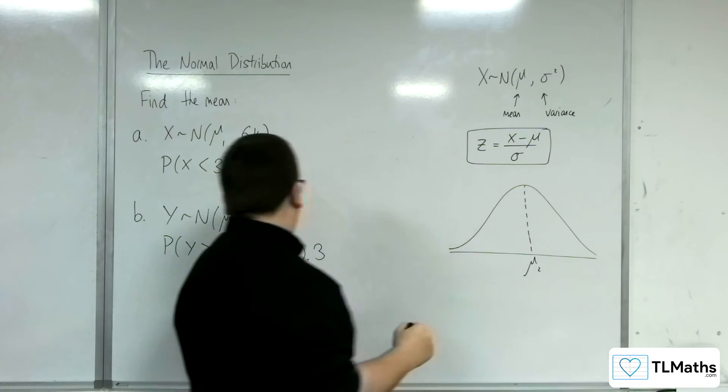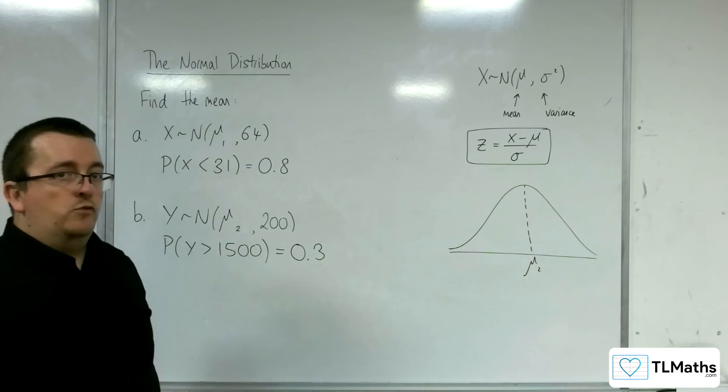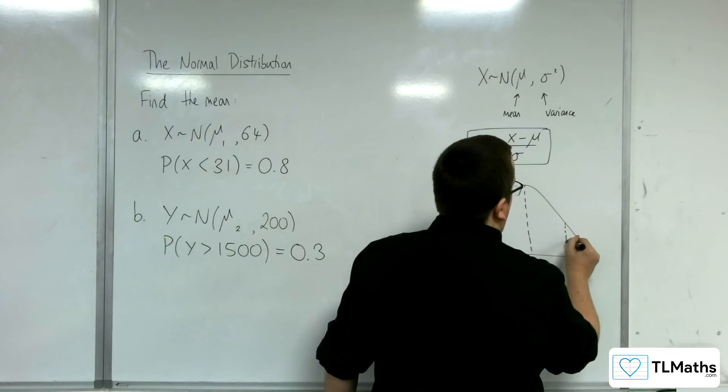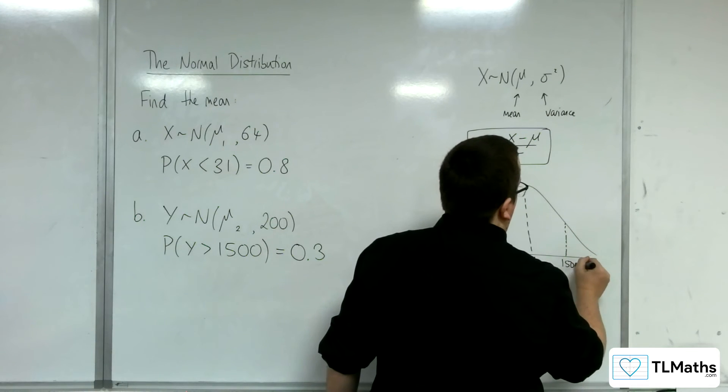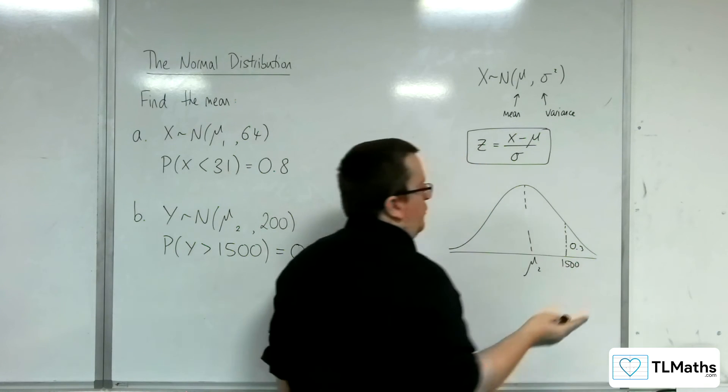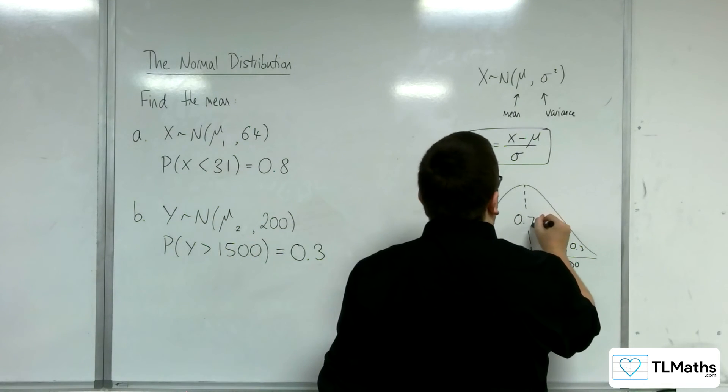There's mu2. To the right of 1500 must be an area of 0.3. So 0.3 is quite small. For it to be on the right, that means that 1500 has got to be over here for that to be 0.3. Now, I can't look up 0.3 in my calculator, so I've got to use the left-hand area, 0.7.